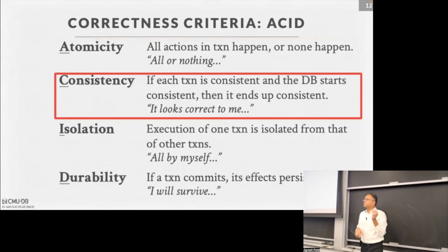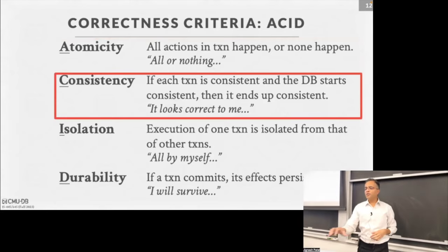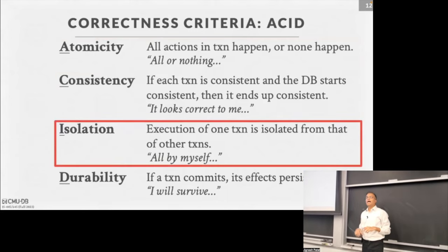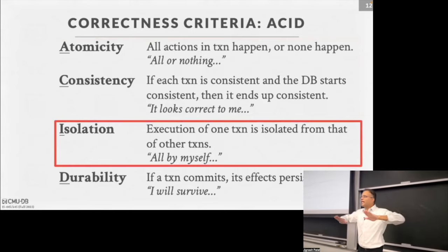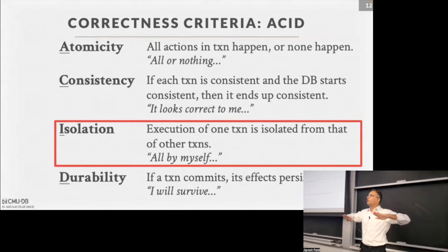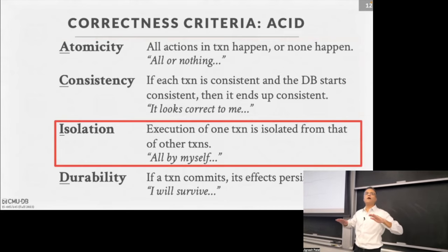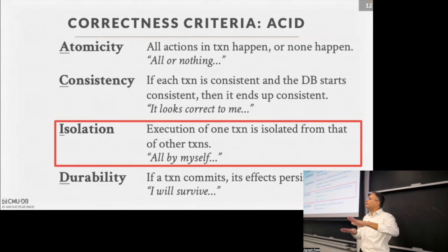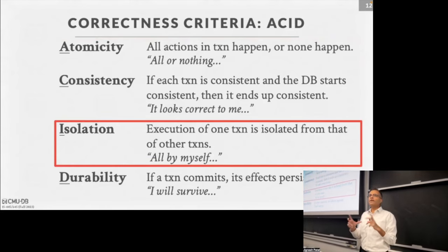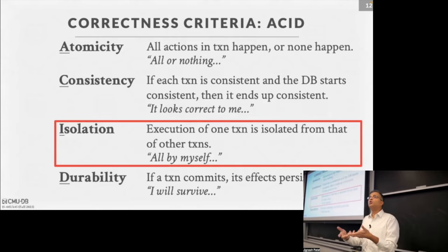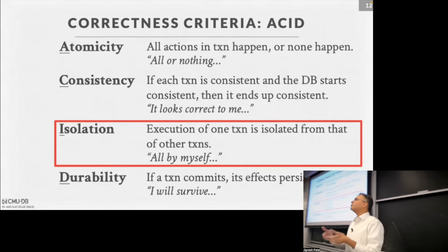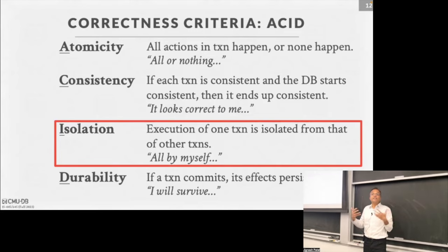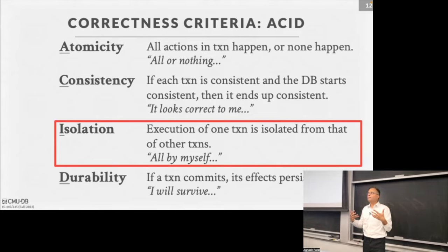Let me skip Consistency for a moment and go to Isolation. Isolation says: if two transactions — like those two $25 debit transactions — are happening, we want them to not interfere with each other. It should feel like each transaction happened by itself. Even though we don't want to run one at a time, we want the illusion of the system running one transaction at a time. When my transaction ran, I should feel like I had the whole system to myself and nothing else interfered.